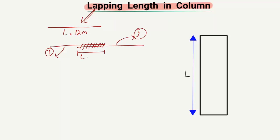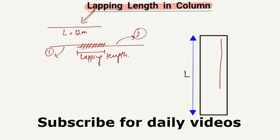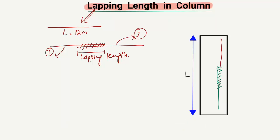Now, what is the lapping length of steel bars in a column? If I draw a steel bar here — this is one steel bar, and I draw another steel bar alongside it — the overlapping region is the lapping length of the steel bar for the column, represented as L. For example, the lapping length is provided at the middle of the column.